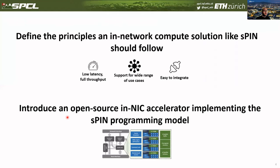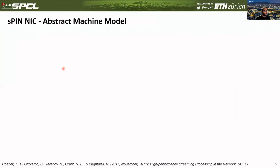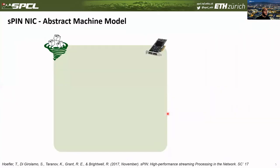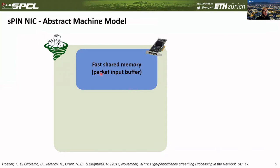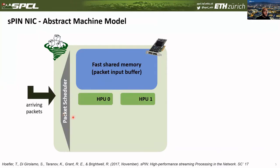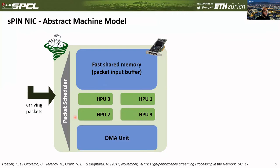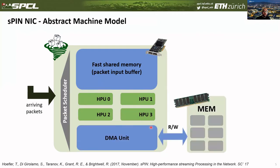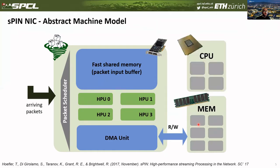Before getting into that, let's quickly review how SPIN works. For this, we use an abstract machine model — the contract we give to the programmer, describing what they can expect to have on the NIC. On the NIC, we have a fast shared memory that includes a packet input buffer, a packet scheduler, and a set of handler processing units, HPUs. The DMA unit allows communication with the host memory. The CPU is not involved in the critical part, but uploads the handlers — the code that applications want to execute on incoming packets — and manages the NIC memory, for example to initialize the state of the handlers.